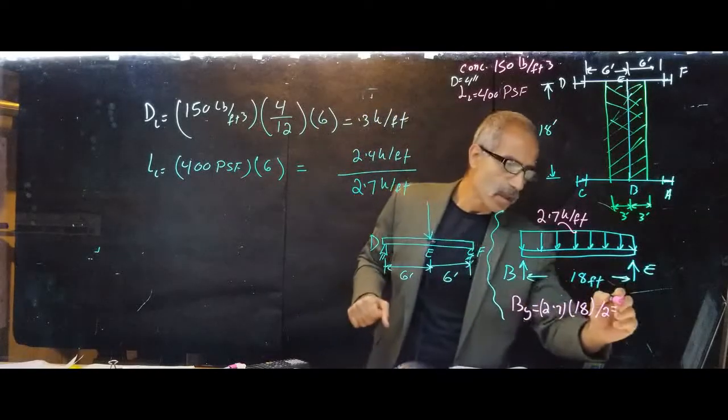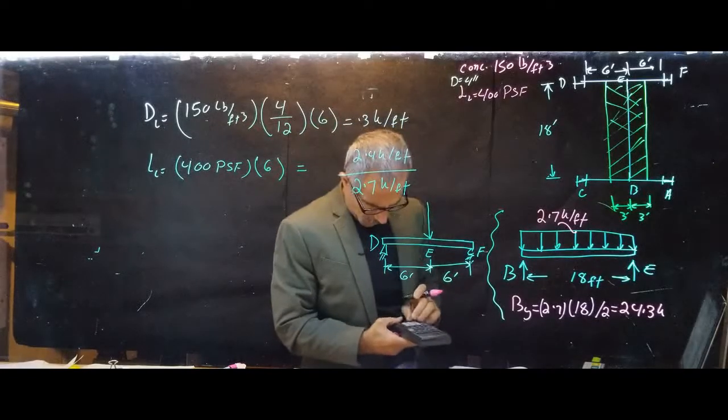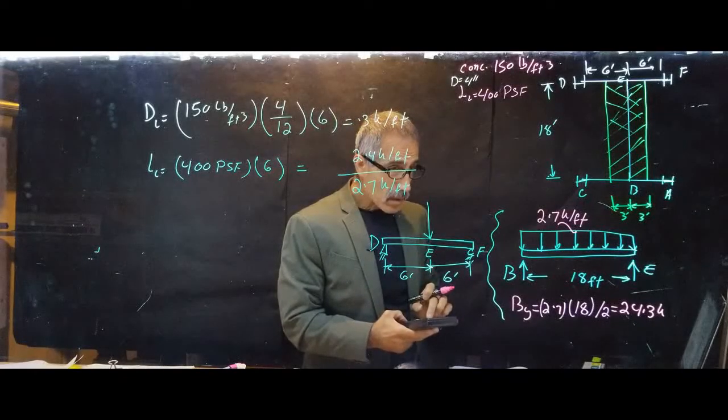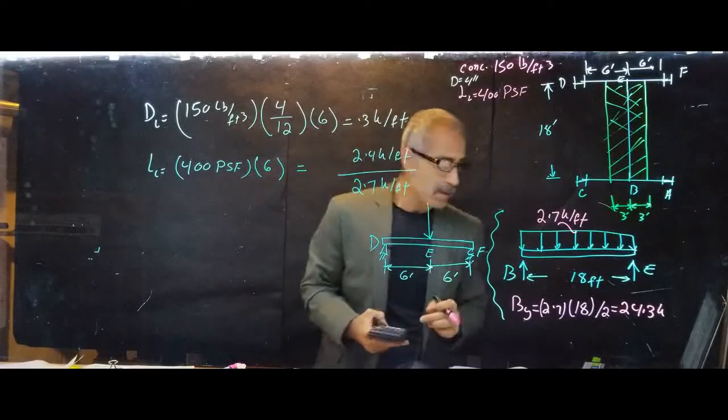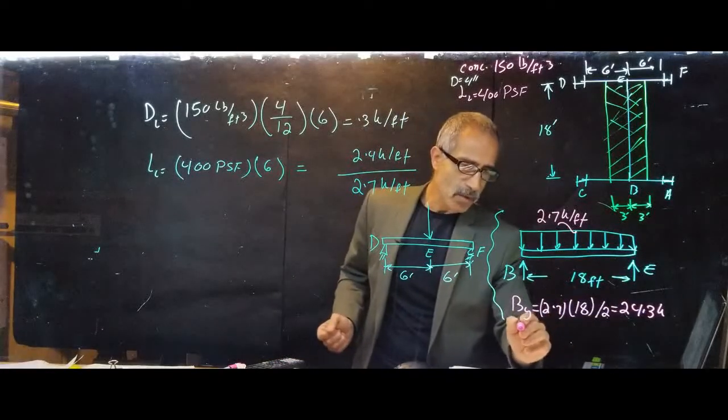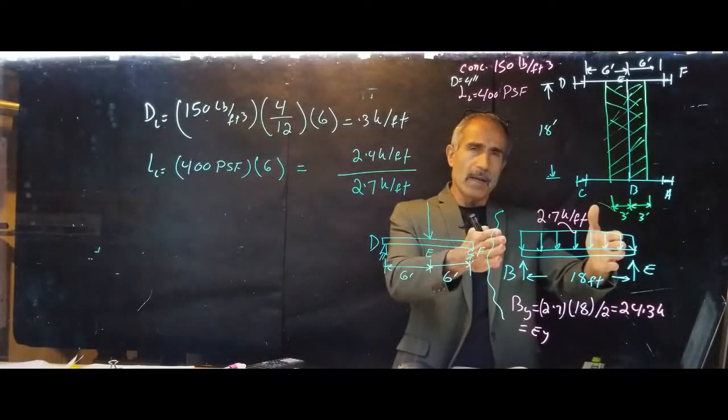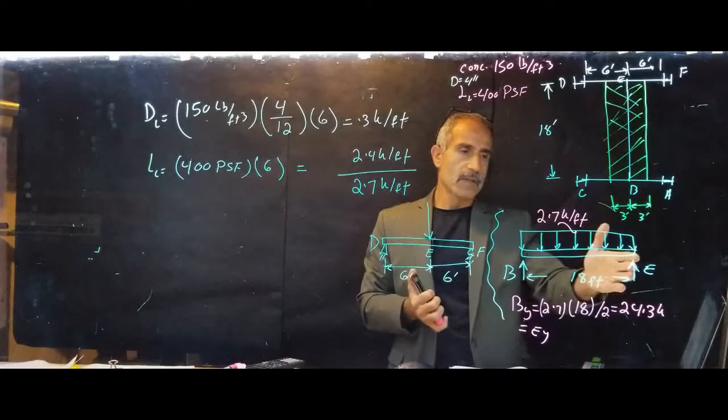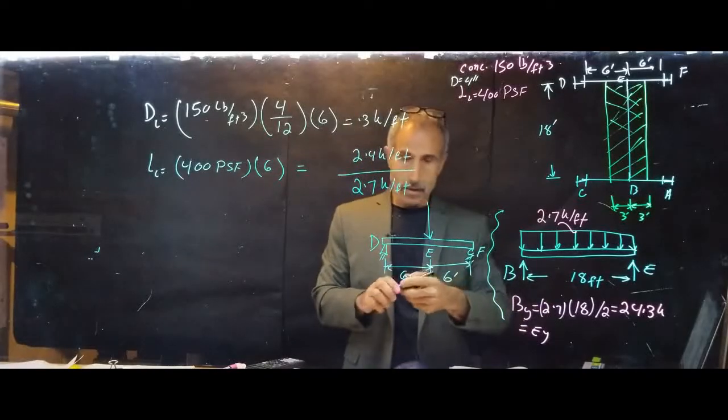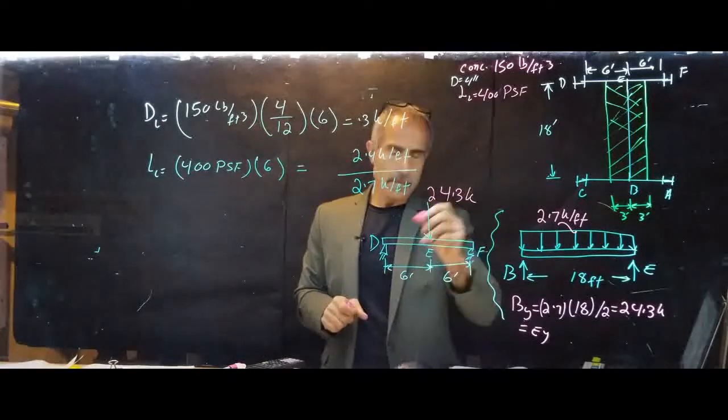It comes out to 24.3 kips. So that's By, and Ey comes out the same thing, also equal to Ey. The reason I said that is because this is a perfect symmetric case. You can look at the back of the book also. So both reaction forces are half of the concentrated load here. So now we have that and we know this load right here is going to be 24.3 kips. Okay, that's it.